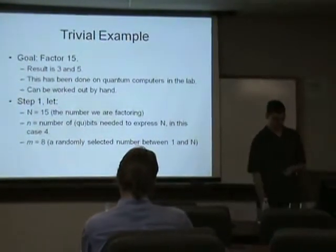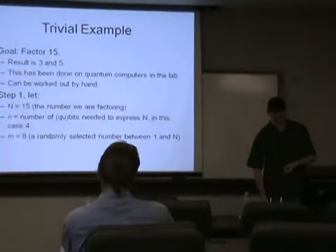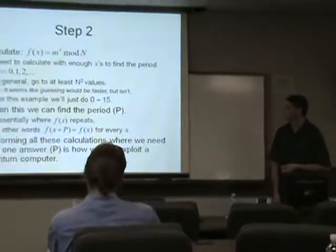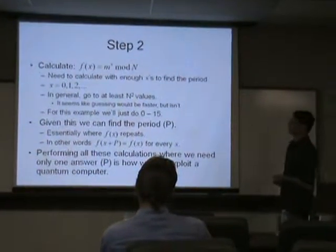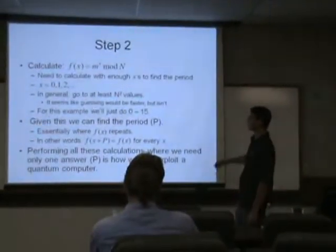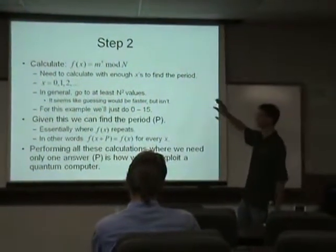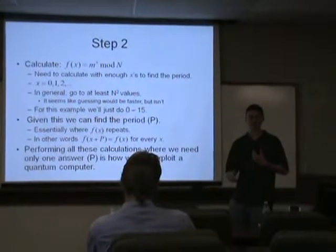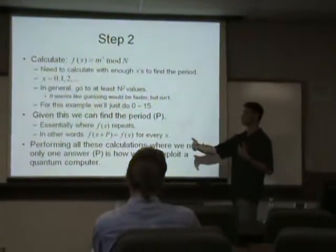We'll pick 8 in this case because it works. It gives us the answer so we don't have to repeat it. So step 2, we're going to calculate m to the x mod N. We need to calculate with enough values of x where we can find the period. We want to see where it starts repeating essentially.